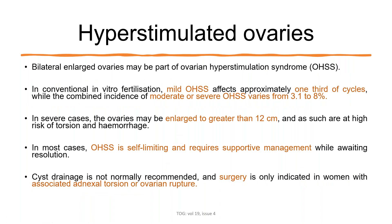Hyperstimulated ovaries cause bilateral enlarged ovaries and mainly result from in vitro fertilization. Mild ovarian hyperstimulation usually affects one third of cycles, while moderate to severe hyperstimulation occurs in 3.1 to 8% of cases. In severe cases, the ovaries may enlarge to more than 12 cm, with a higher risk of torsion and hemorrhage. Ovarian hyperstimulation is usually self-limiting and requires supportive management. Cyst drainage is generally not recommended; surgery is only indicated if torsion or ovarian rupture occurs.